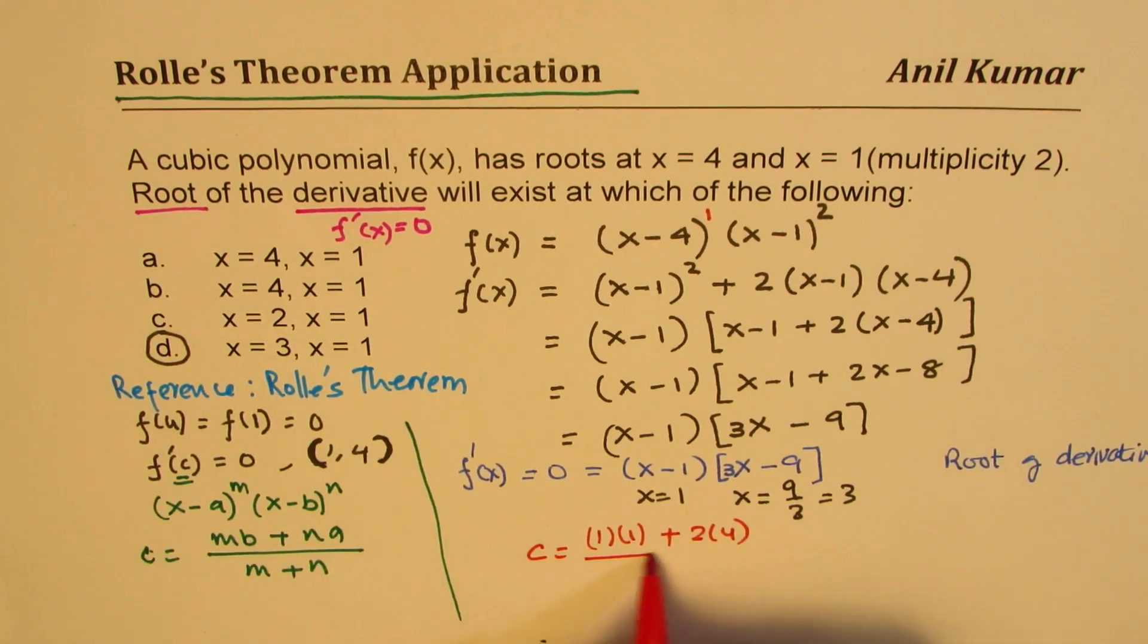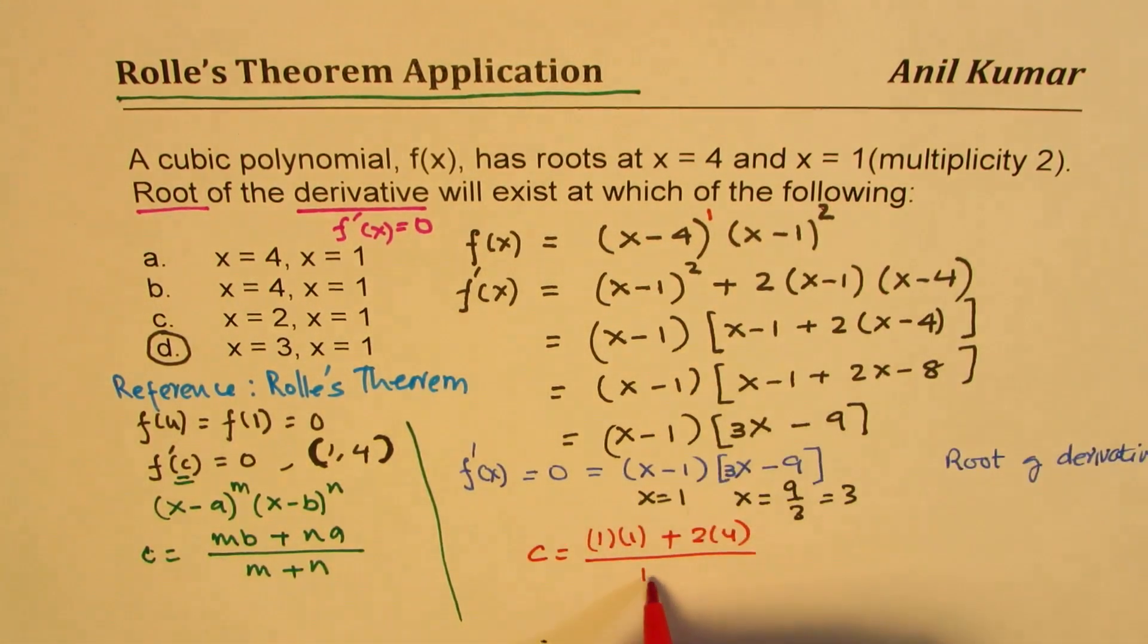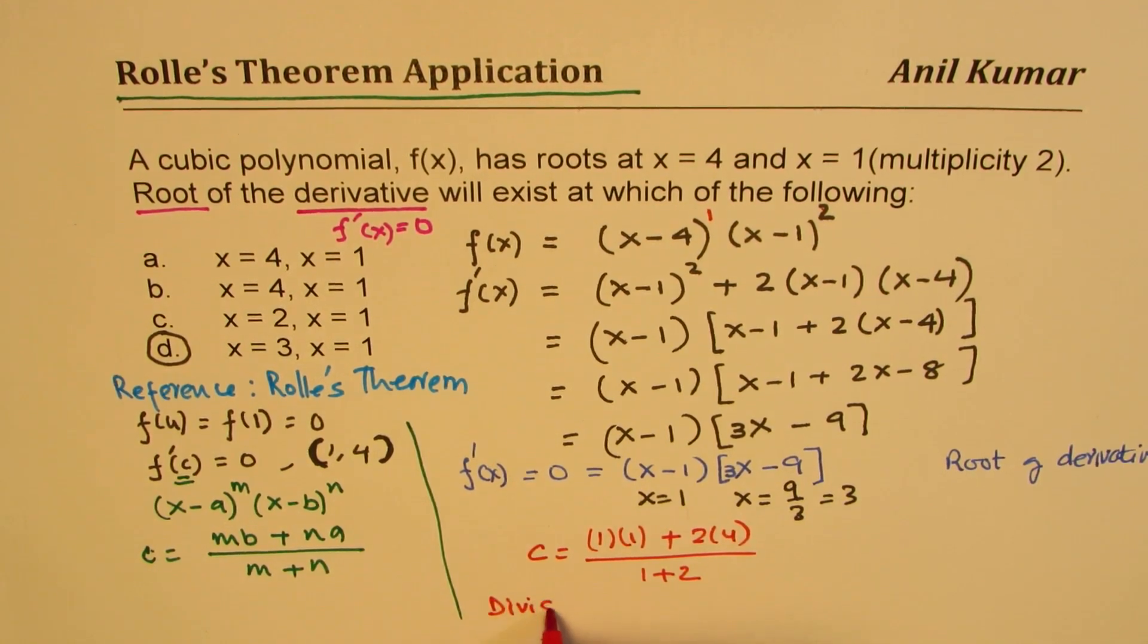Plus 2 times 4 divided by 1 plus 2. So it is a section formula. This is division of line segment, right?